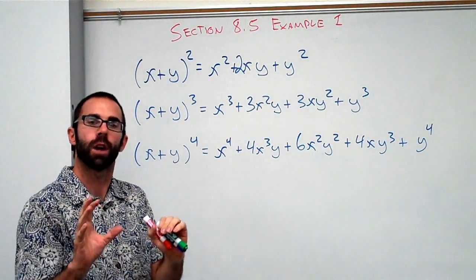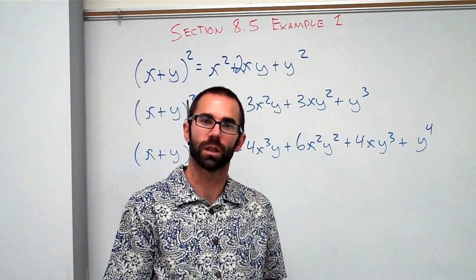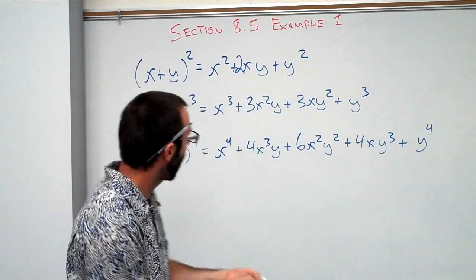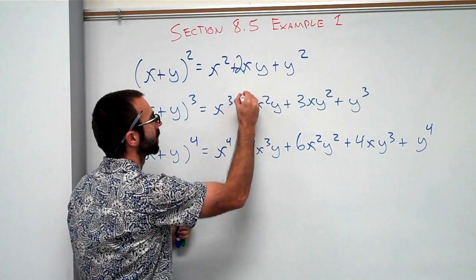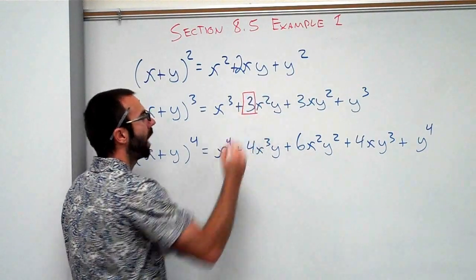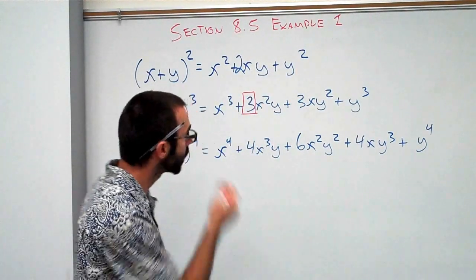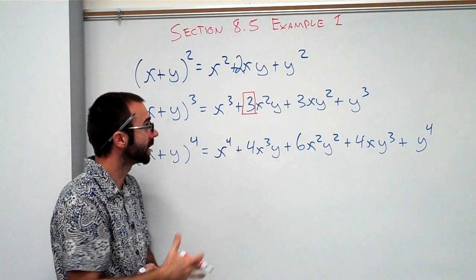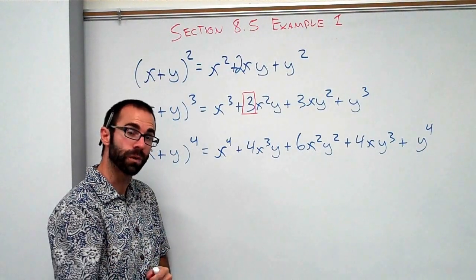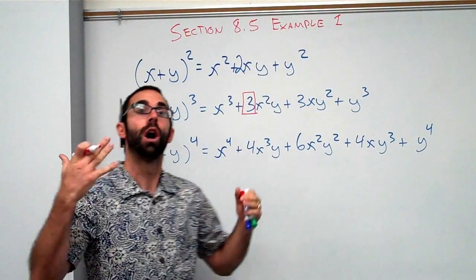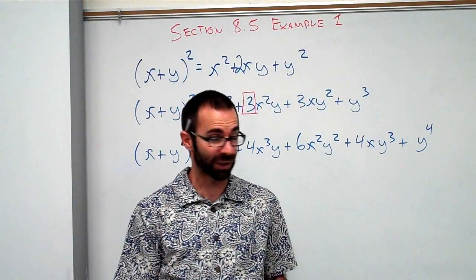Now what I want to focus in on is how do we get the coefficients? How do I get, for example, something like this? Say if I wanted to know how did you know that that was a 3? What I want to do is let's go through the exercise of doing that and then I'll formally define the binomial theorem.